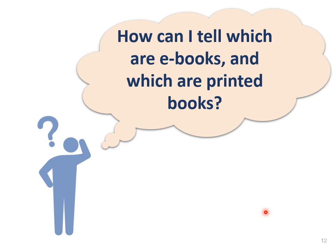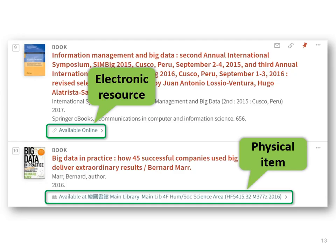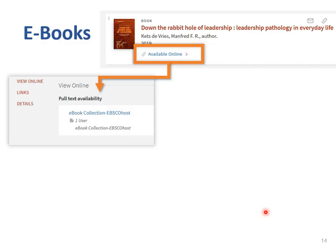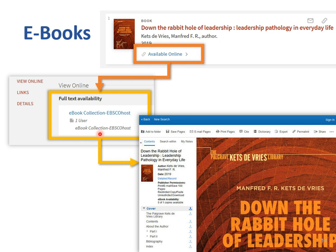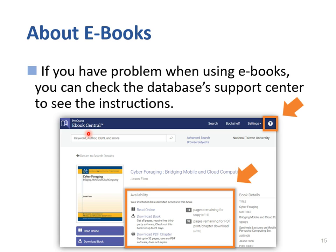Next, how can I tell which are e-books and which are printed books? In the search result page, you can see the electronic resources and physical items. If the item is available online, you can scroll down to view online and click on the link to access it. For example, the e-book is on the EBSCOhost platform. Because there are different specifications for the use of e-books among publishers, you may have limitations in printing or downloading the PDF. If you have any questions when using e-books, please check the database support center for instructions or you can ask our staff for help.